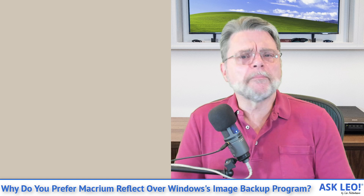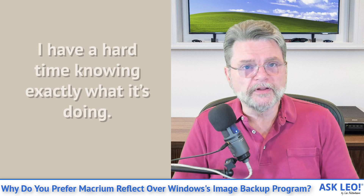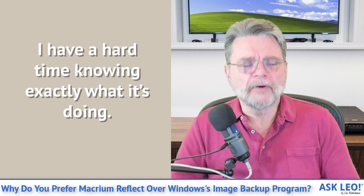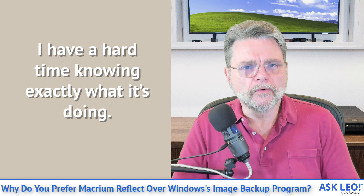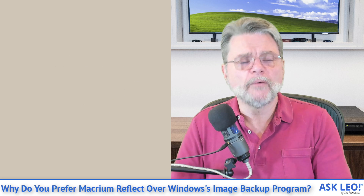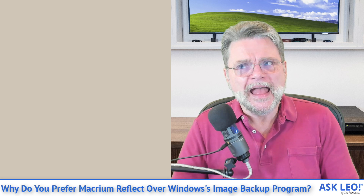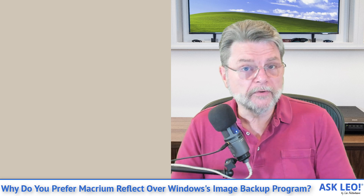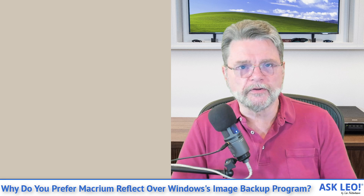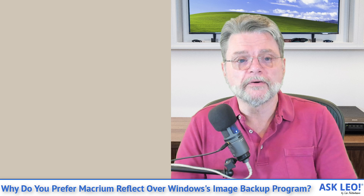My biggest complaint about the Windows 7 backup utility is that once you turn it loose, I have no idea what it's doing. There's no progress information, errors are horrible, and there's very little flexibility about exactly how and where things get stored. It's just a frustrating experience. And if there weren't better alternatives, I'd be saying we should all be using it — but there are much better alternatives.